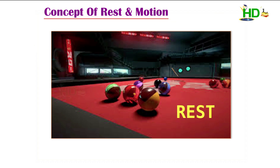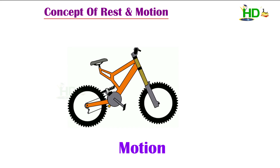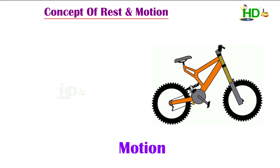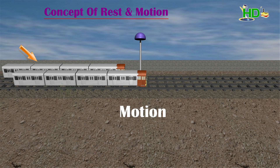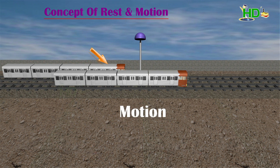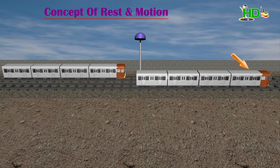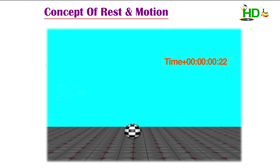Now, what is rest? What is motion? When can we say an object is at rest, and when can we say the object is in motion? An object is said to be at rest if its position does not change with respect to its surroundings with time.